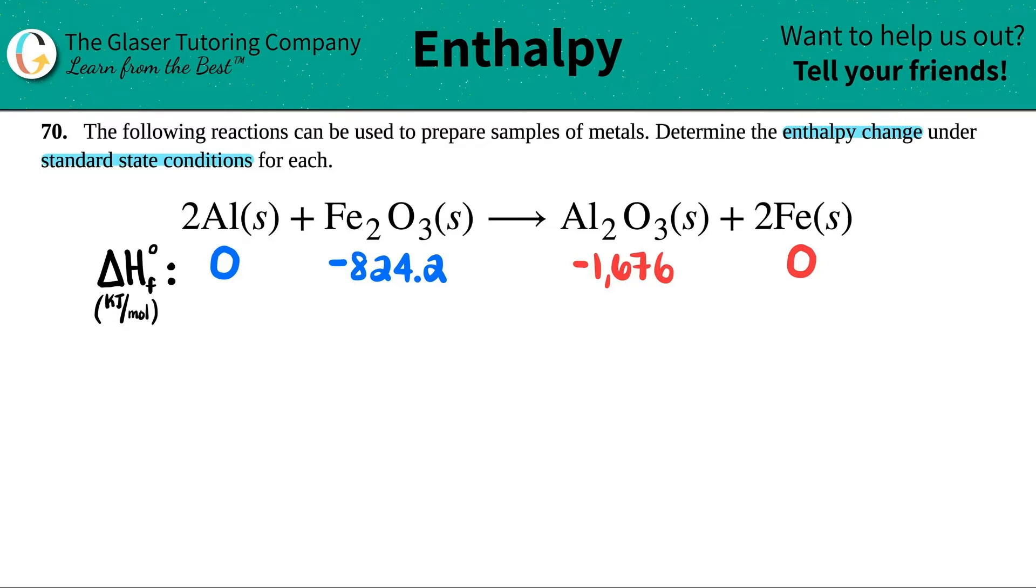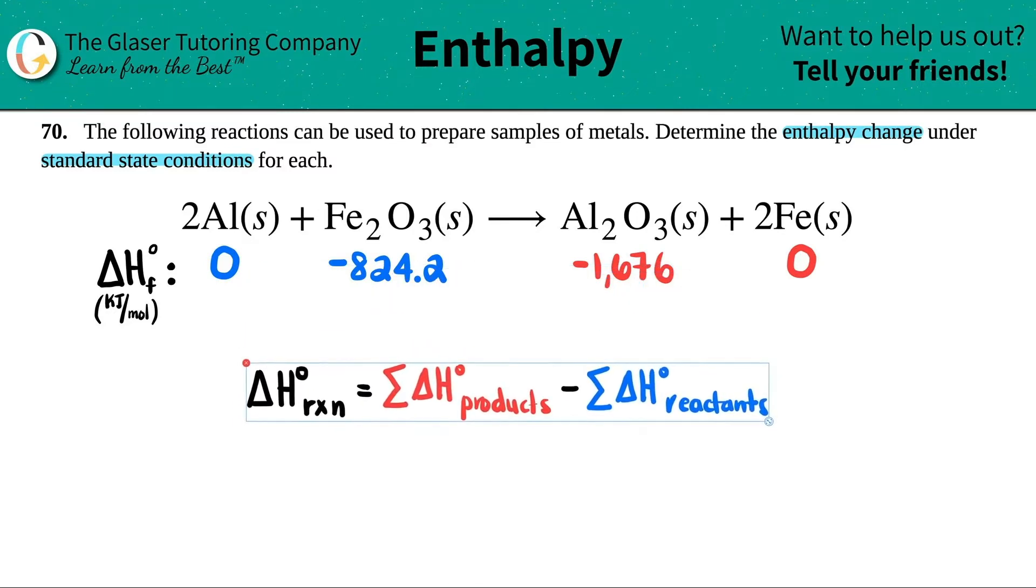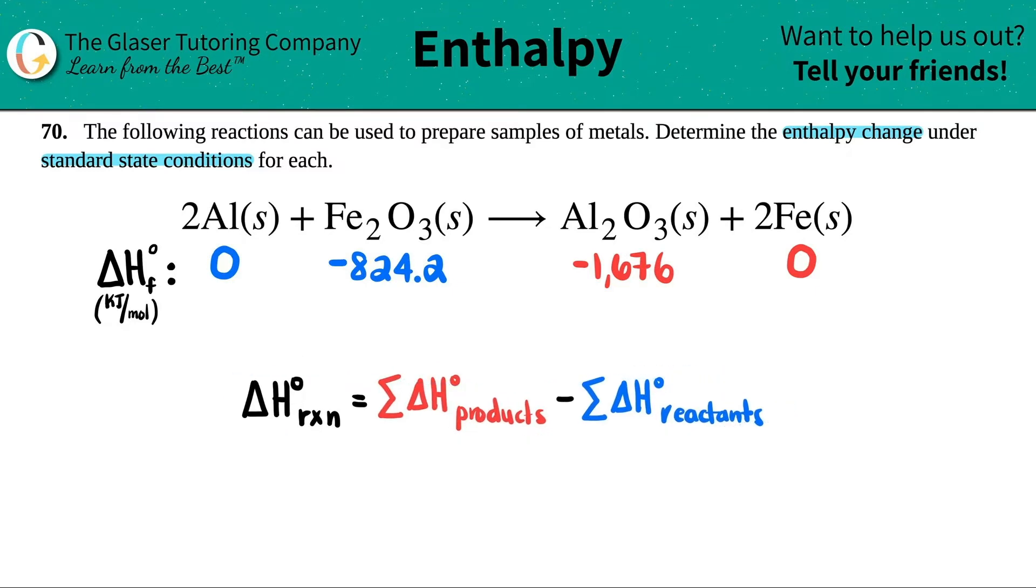Now after you do that, we have to find out the enthalpy change for the reaction. It's a simple formula. The delta H standard for a reaction is just the sum. This little symbol just means sum, a.k.a. addition. We've got to add up all the delta Hs of the products and then minus the sum of all the delta H of the reactants. So basically what that means is I just have to get one number for my reactant and one number for my product and then subtract them.